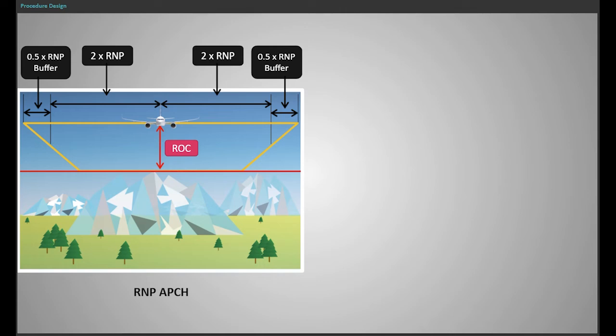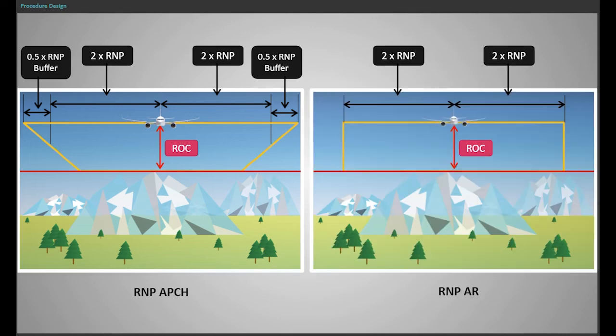RNP-AR, RNAV RNP obstacle clearance corridor uses a rectangular shape without a buffer area.